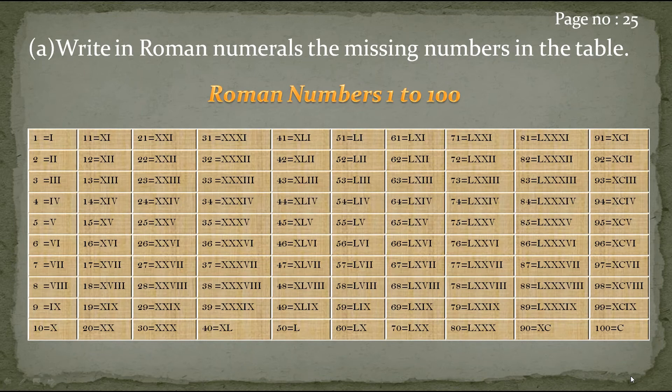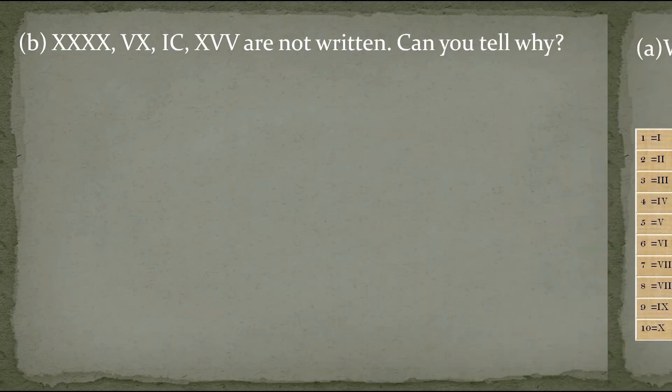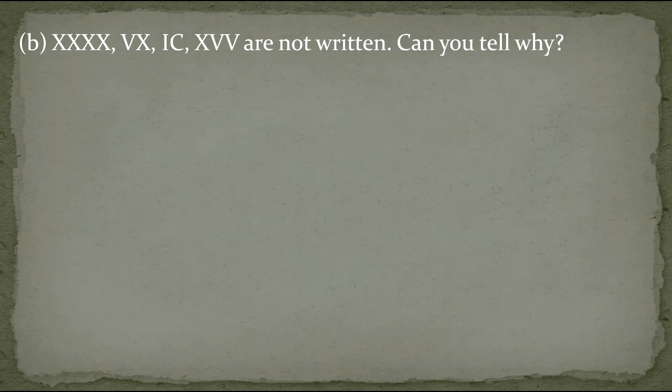Now let's solve the second question. The combinations XXXX, VX, IC and XVV are not written in the table. We have to give the reason why. Can you tell why?